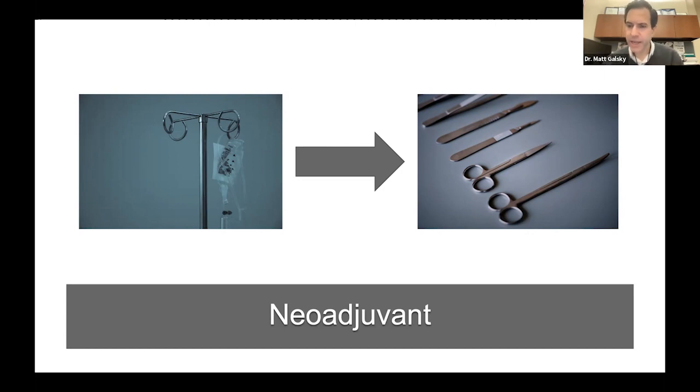What that means is that our ability to prognosticate, our ability to understand who's at higher likelihood for having microscopic spread of cancer versus who's not, is more limited than once the bladder is removed.